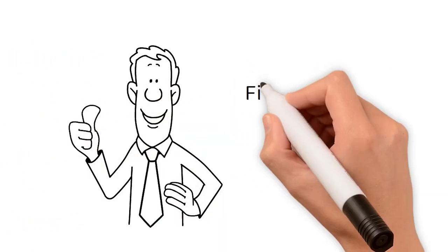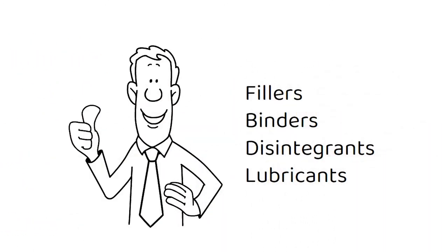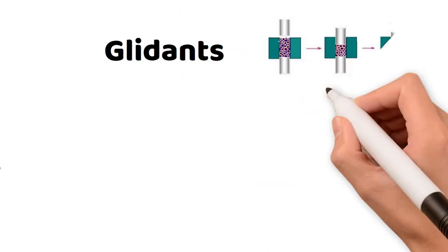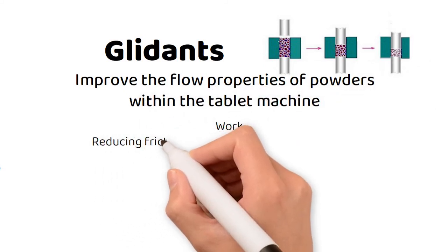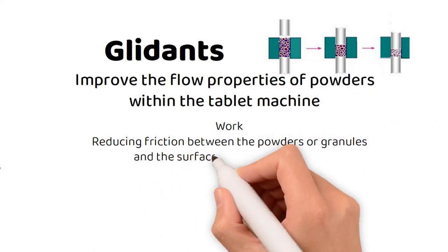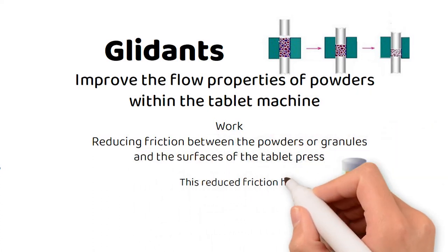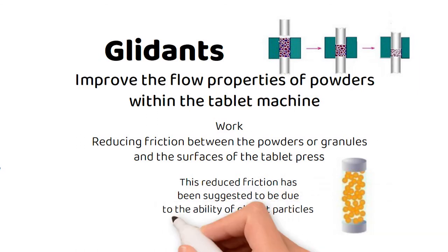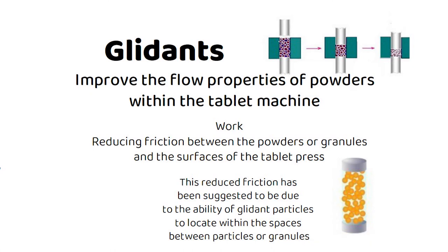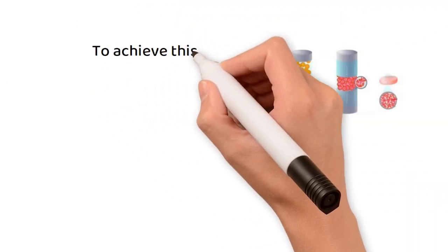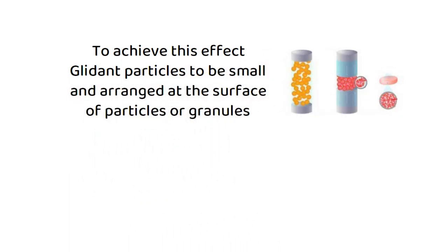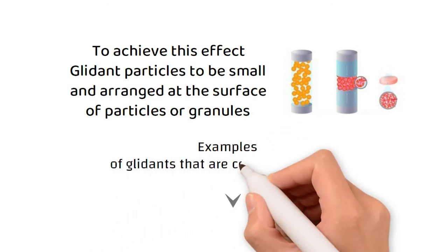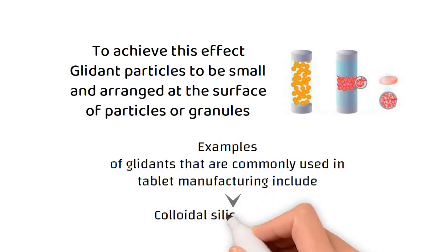We have talked so far about fillers, binders, disintegrants, and lubricants. To these we will add glidants, which are used to improve the flow properties of powders within the tablet machine. They work by reducing friction between the powders or granules and the surfaces of the tablet press. This reduced friction is suggested to be due to the ability of glidant particles to locate within the spaces between particles or granules. To achieve this effect, glidant particles must be small and arranged at the surface of particles or granules. Examples of glidants commonly used in tablet manufacturing include colloidal silicon dioxide and talc.